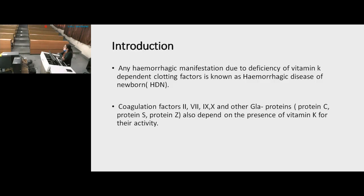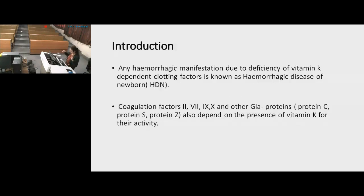Hemorrhagic disease involves our clotting factors: 2, 7, 9, and 10, and other GLA proteins like protein C, S, and protein Z. These also depend on the activity of vitamin K.